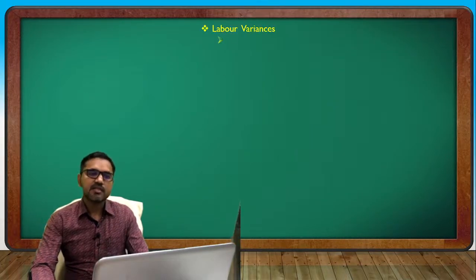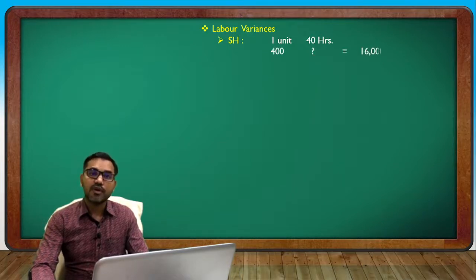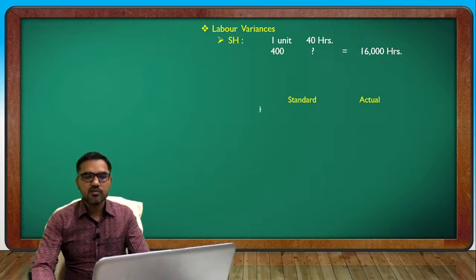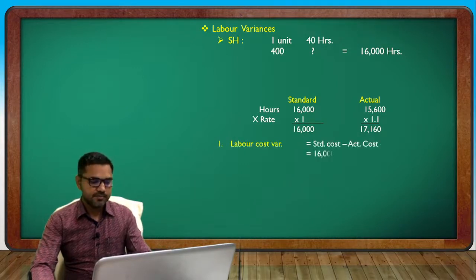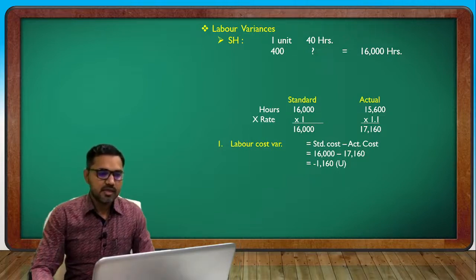Now labor variance. Standard hours: for output of 400 units, standard is 16,000 hours at rate 1 rupee. Actual: 15,600 hours at 1.10. Apply labor cost variance formula: standard cost minus actual cost = minus 1,760 (unfavorable).